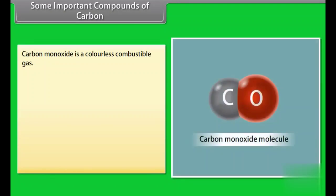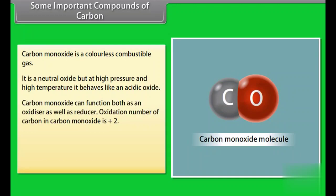Carbon monoxide is a colorless combustible gas. It is a neutral oxide but at high pressure and high temperature it behaves like an acidic oxide. Carbon monoxide can function both as an oxidizer as well as reducer. Oxidation number of carbon in carbon monoxide is +2.